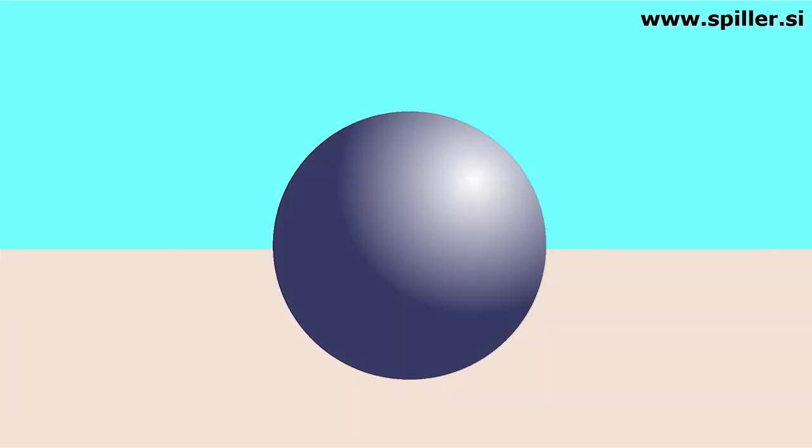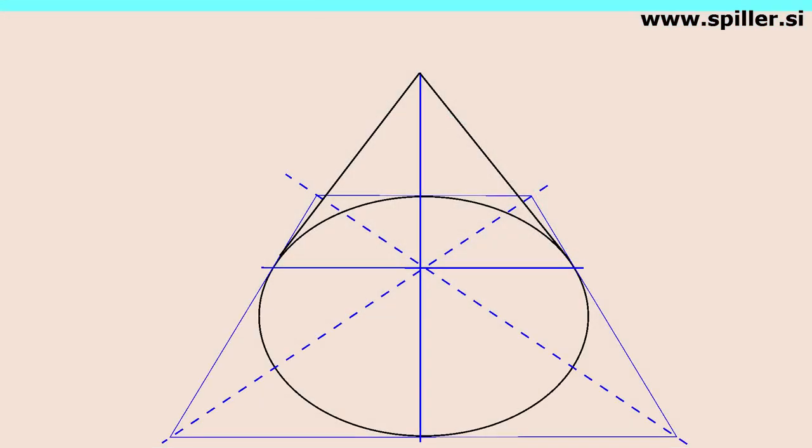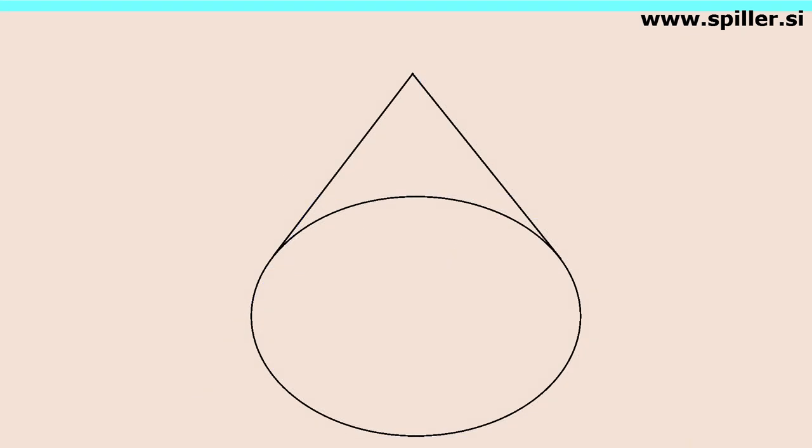You always draw a sphere as a circle, and you must shade it to make it a sphere. To find the center of the cone, we use diagonals of the square, just as we did with the pyramid.